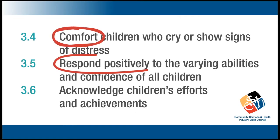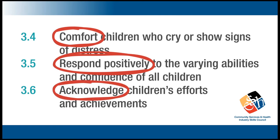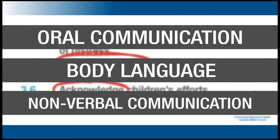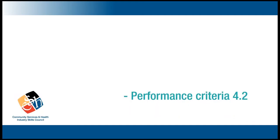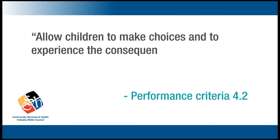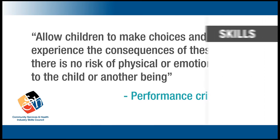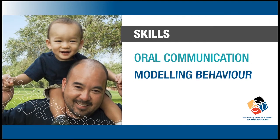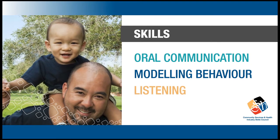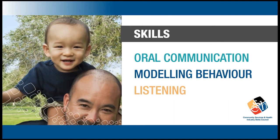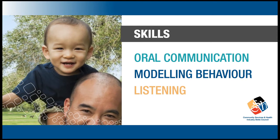Further on in the same example unit, there are performance criteria that require the support and respect of children. These are skills that are not just about what you say — they're also about body language and non-verbal communication. Sometimes foundation skills will take some thinking about in practice. Performance criterion 4.2 says: 'Allow children to make choices and to experience the consequences of these, where there is no risk of physical or emotional harm to the child or another being.' That really requires a conversation with a child, providing options for them to choose from, and having them understand the consequences of their choices. These are skills that need to be developed.